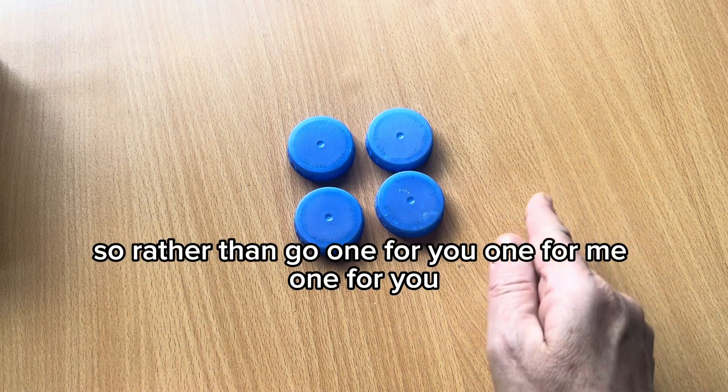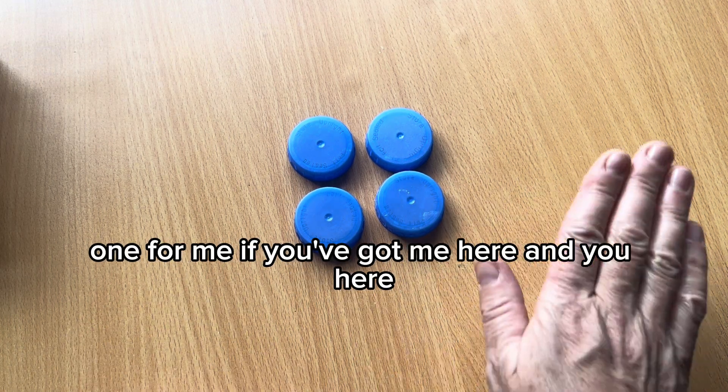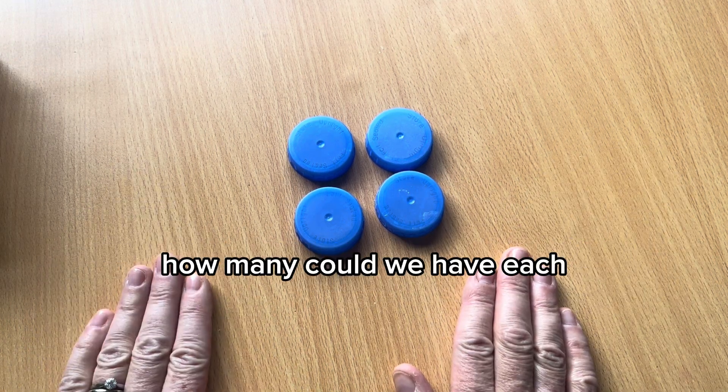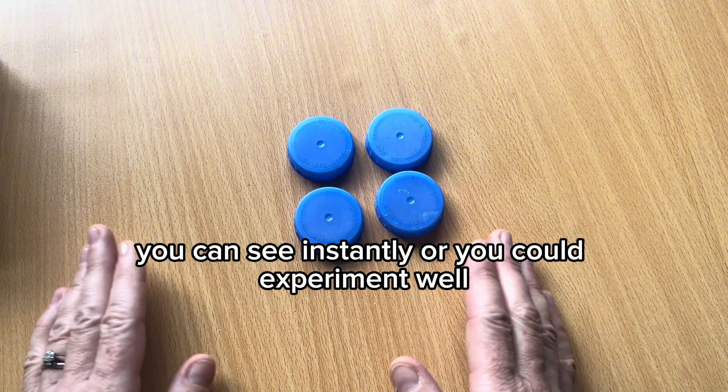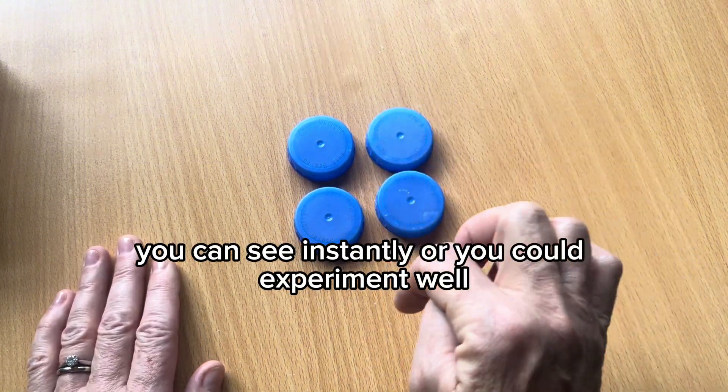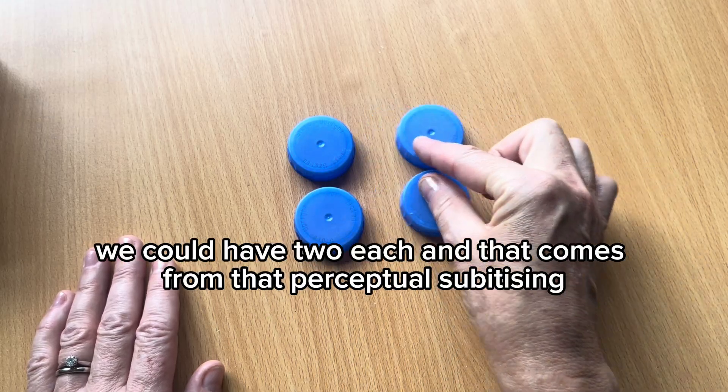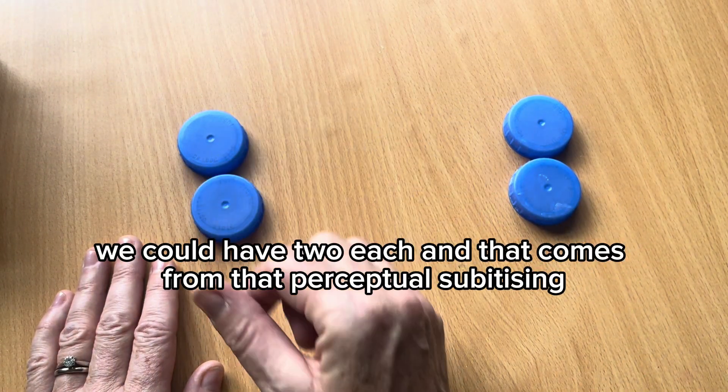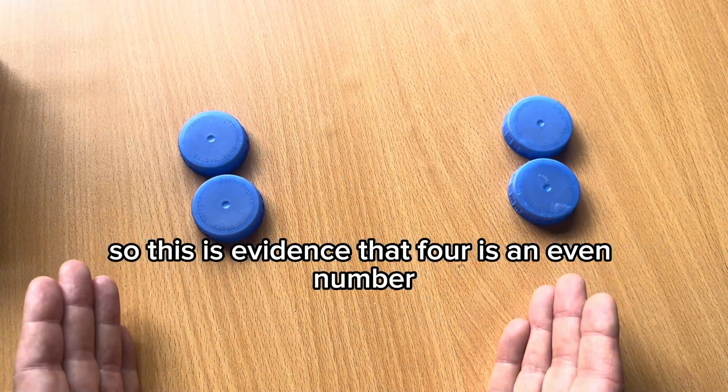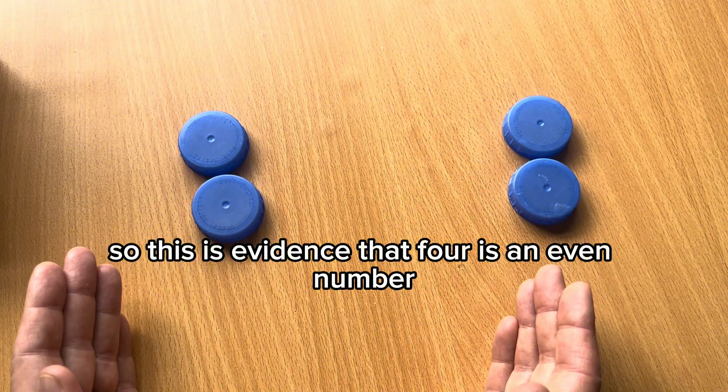So rather than go one for you, one for me, one for you, one for me, if you've got me here and you here, how many could we have each? You can see instantly. Or you could experiment. Well, I could definitely have one. You could definitely have one. Oh, look, we could have two each. And that comes from that perceptual subitizing. So this is evidence that four is an even number.